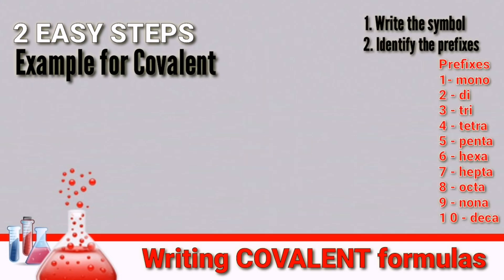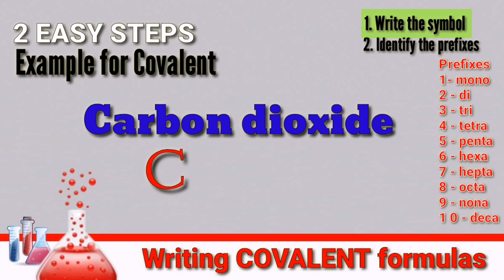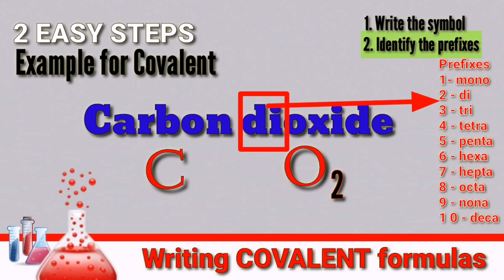Now let's have an example on how to write a covalent compound formula. We have carbon dioxide. Simply follow our two easy steps. First, write the symbol of the elements: C for carbon, and O for oxygen. Now let's proceed with our second step - identify the prefixes being used in the compound. That is 'di', and di means 2.